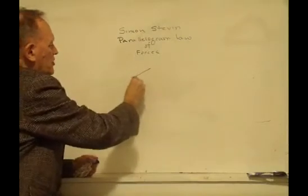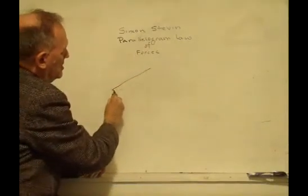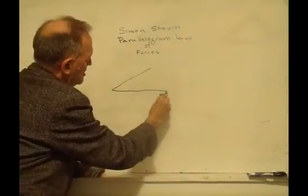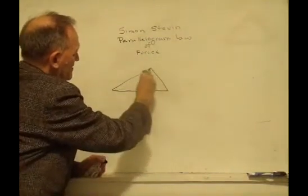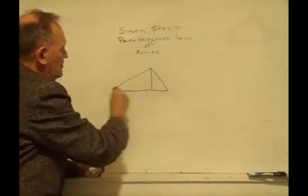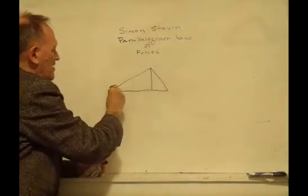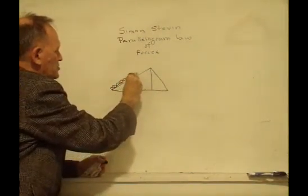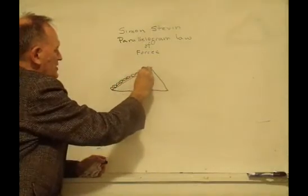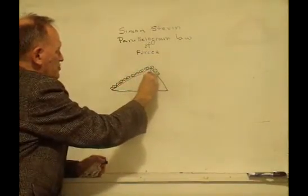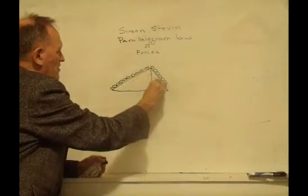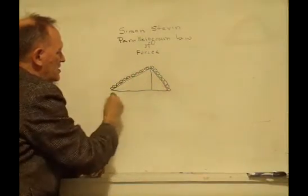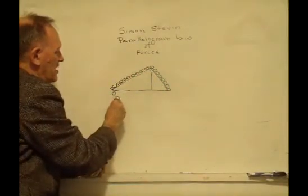He would draw two inclined planes back to back. And then he put a chain around it. This is a closed chain. He imagined that this would be able to roll back and forth on this inclined plane.